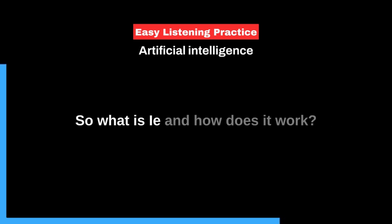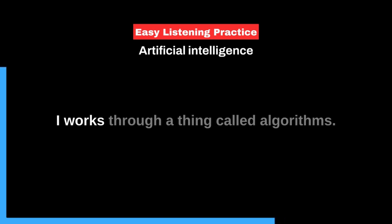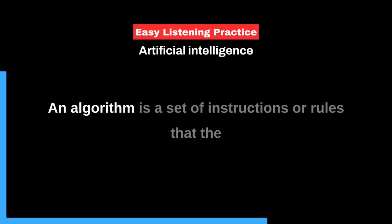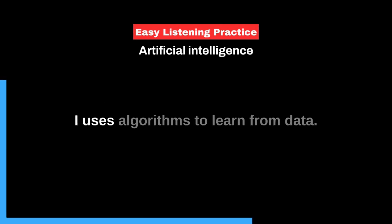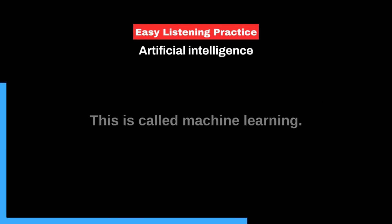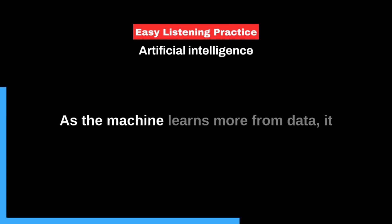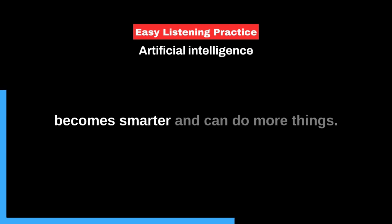So, what is AI, and how does it work? AI works through a thing called algorithms. An algorithm is a set of instructions or rules that the machine follows to solve a problem or make a decision. AI uses algorithms to learn from data. This is called machine learning. As the machine learns more from data, it becomes smarter and can do more things.